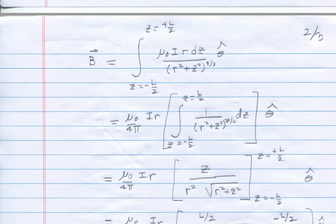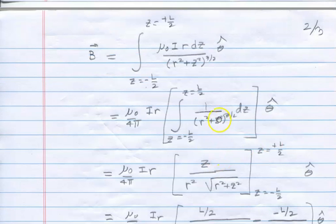And then I just looked it up and found that this integral, remember it's an integral over Z. So as far as the integration of Z is concerned, little r is a constant. And if you look up in integral tables or look up online, you'll see that this integral, the indefinite integral, is Z over R-squared square root of R-squared plus Z-squared. And that has to be evaluated from minus L over 2 to Z equal plus L over 2.